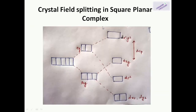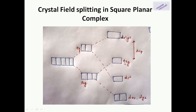Next is crystal field splitting in square planar complexes. Square planar complexes have only four ligands, but we can compare them with octahedral complexes. Suppose in an octahedral complex we remove both ligands along the z-axis — the energy of dz² and dxz, dyz will fall greatly. The ligands along the x and y axes then move closer to the metal atom, so those orbitals feel more repulsion and become a higher energy level. The crystal field splitting energy is the difference between these two sets of orbitals.